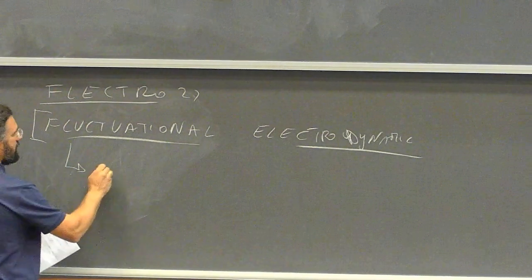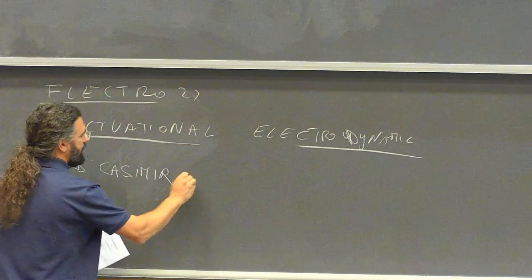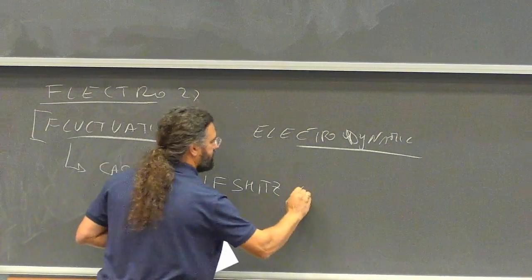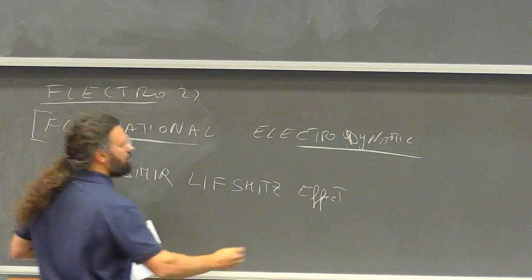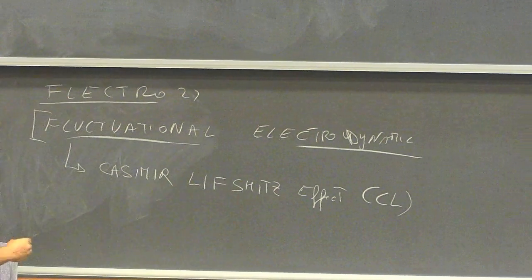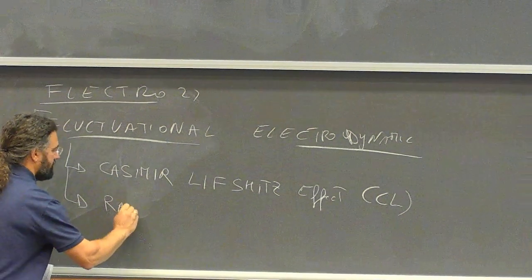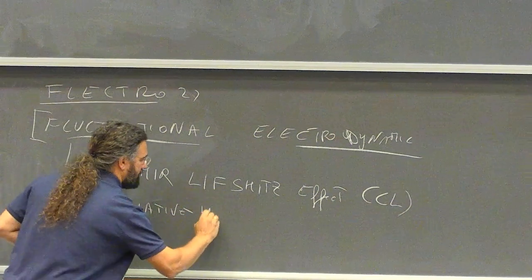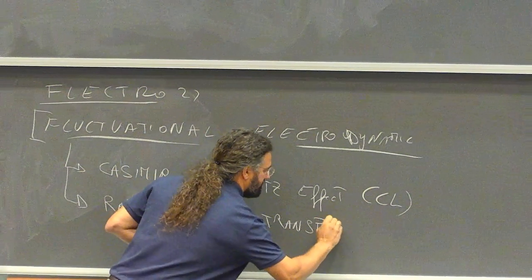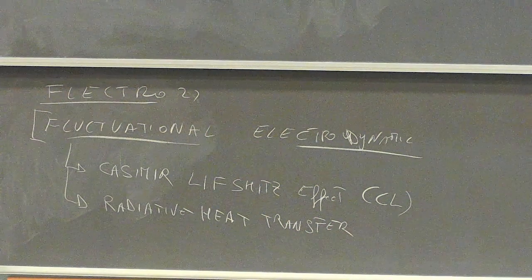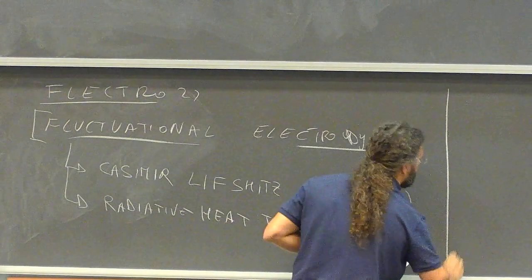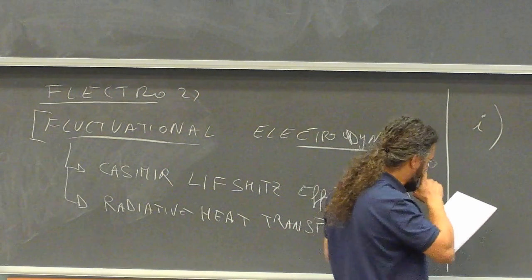There are these two words — fluctuation and electrodynamics — and very soon you will understand why we have electrodynamics and fluctuation close together. I will describe two physical effects in this family: one is the Casimir-Lifshitz effect, which I will call the CL effect, and the other will be the radiative heat transfer. These are the two effects I will deal with, and first I will discuss the vacuum.